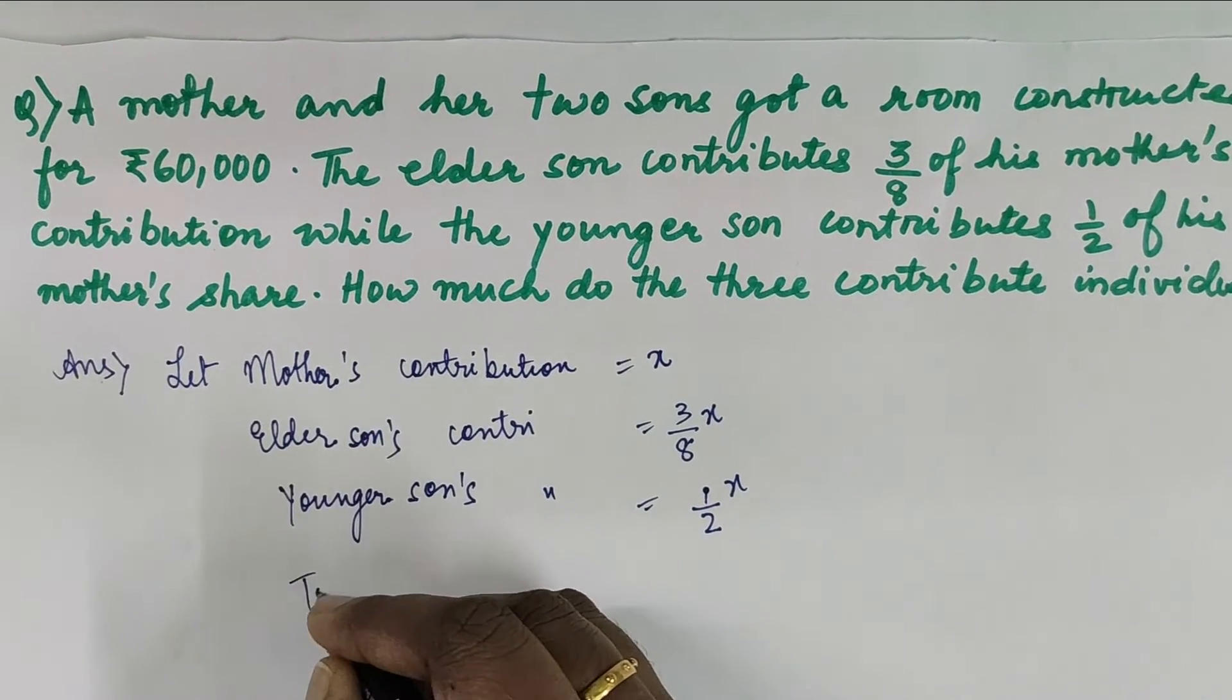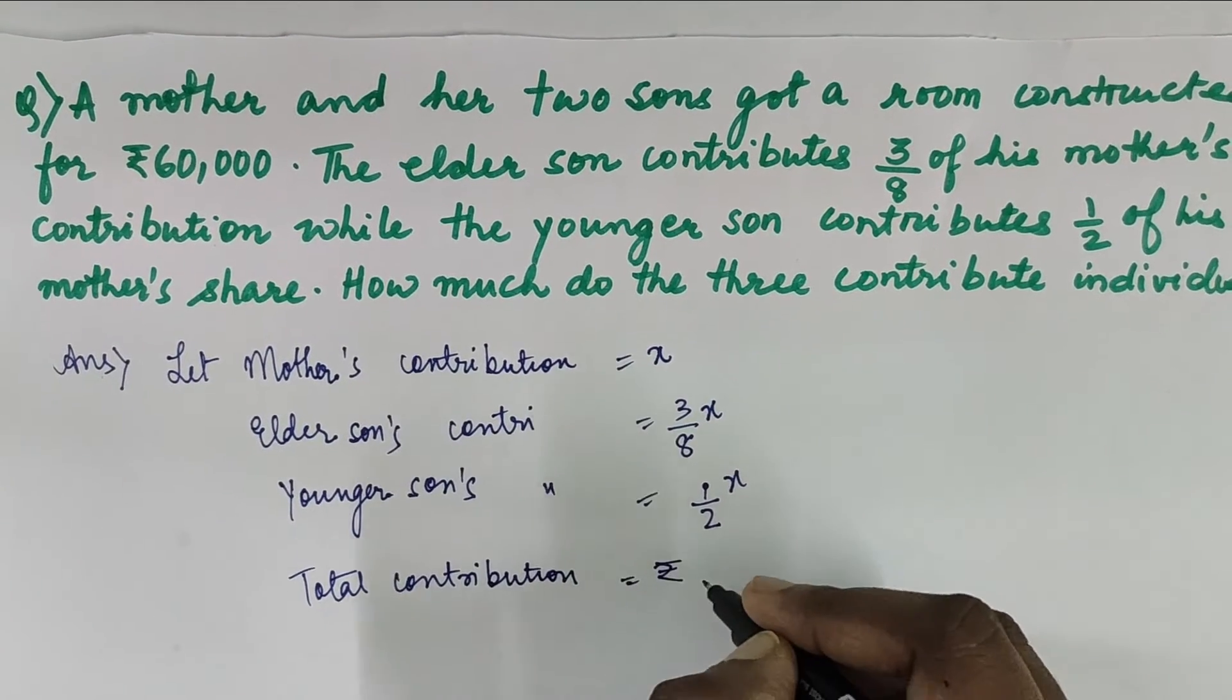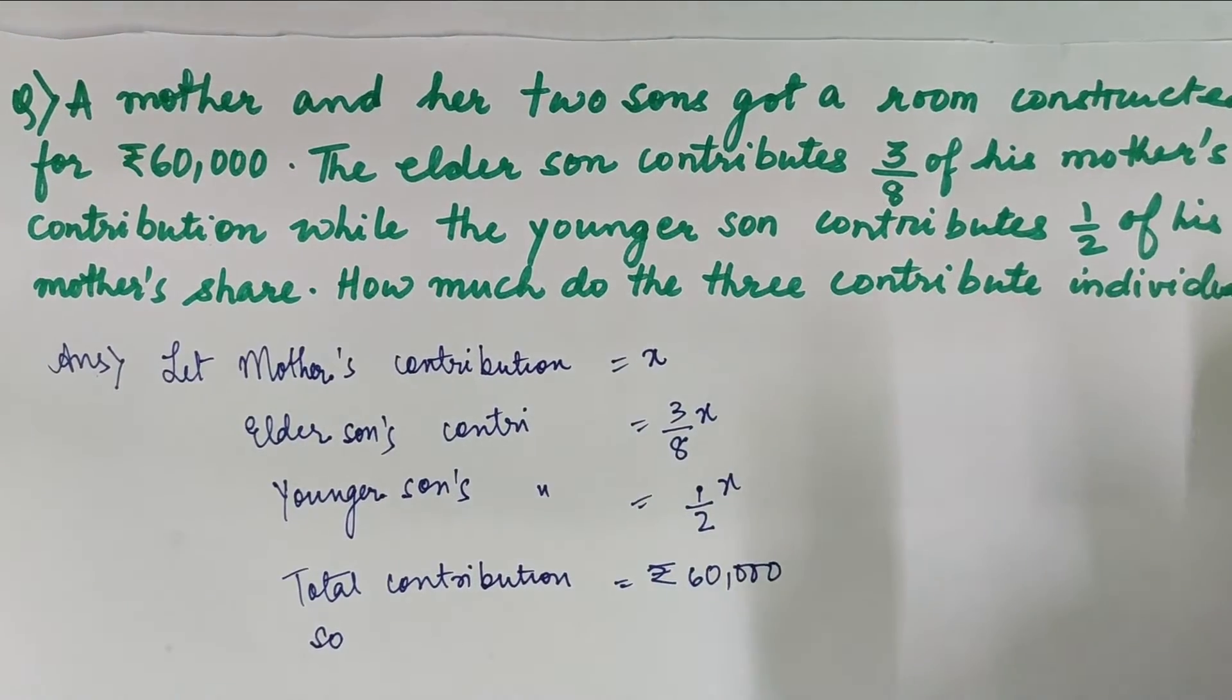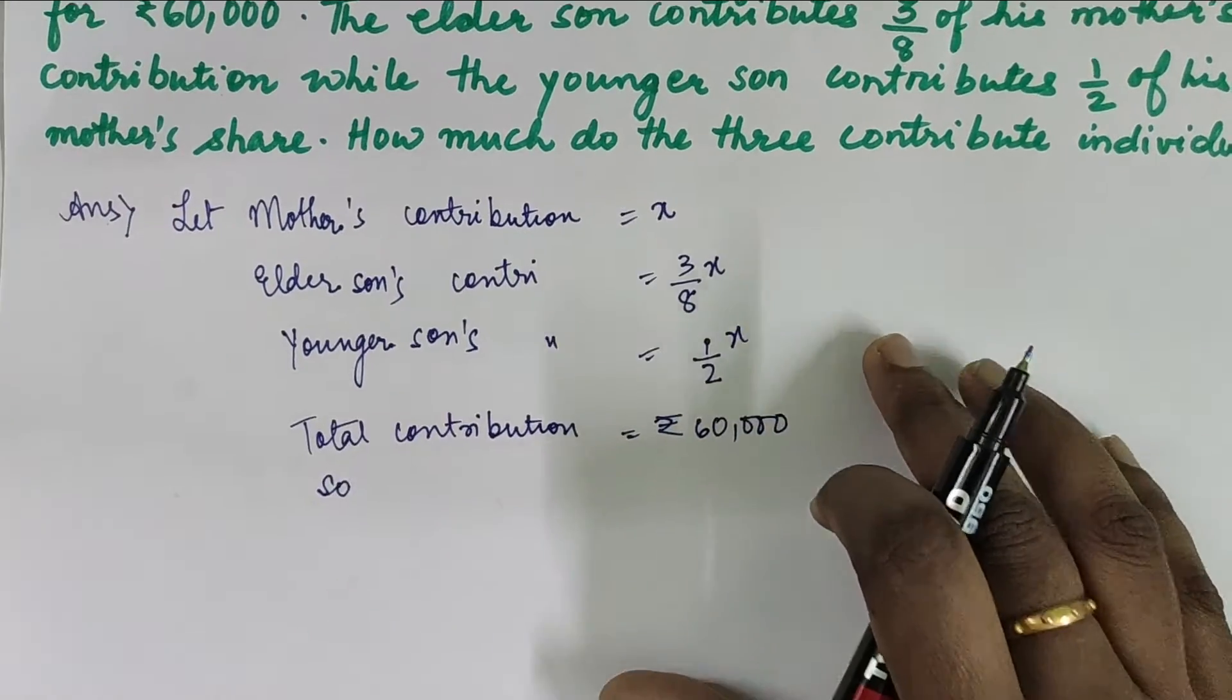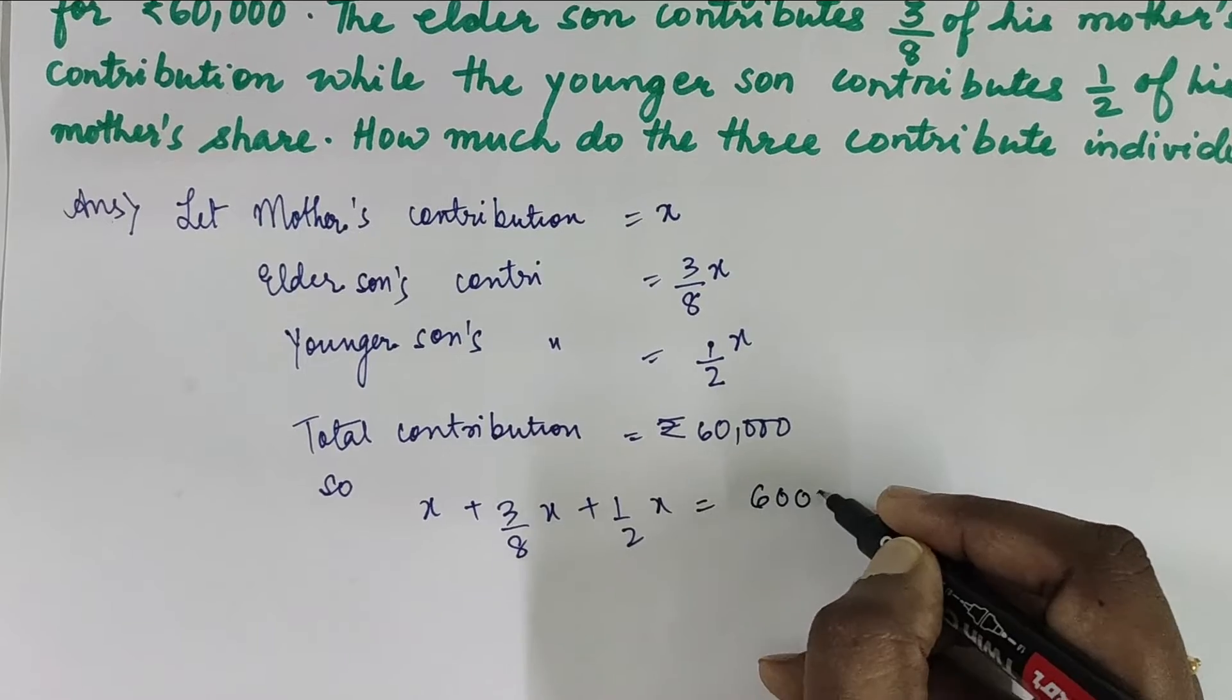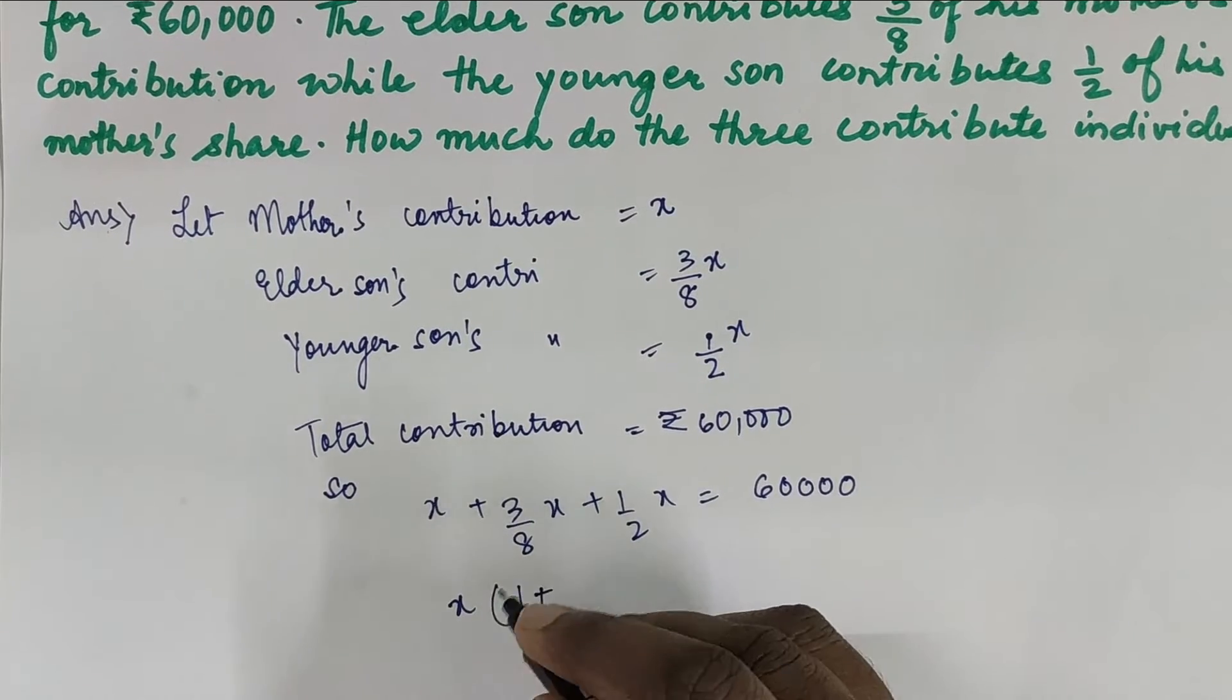Mother's share, total contribution is already known to us, that is ₹60,000. So let us write: total contribution is equal to ₹60,000. If we add all three contributions, we will get the total of ₹60,000. So we'll write x + 3/8 of x + 1/2 of x = 60,000.